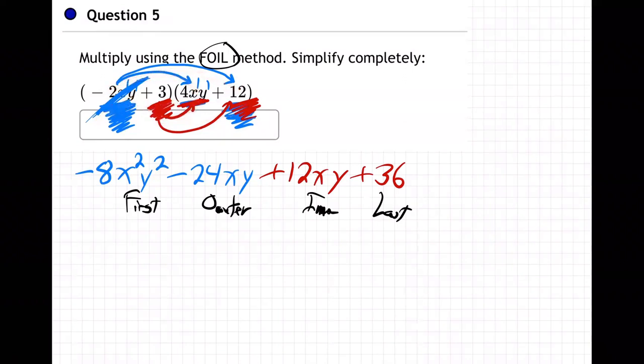The last thing we need to do to finish up this problem is combine these two. Why? Because they're like terms. Combine like terms. Because these two have the same letter pattern. The exact same letter pattern, xy, xy. It's minus 24xy and plus 12xy.